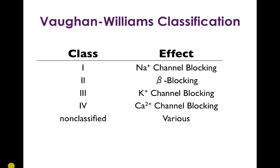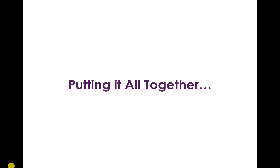To summarize, we covered the Vaughan Williams classification: class 1 drugs subdivided into 1A, 1B, and 1C; class 2 drugs, the beta blockers; class 3 drugs, the potassium channel blockers; class 4 drugs, the calcium channel blockers; and two non-classified drugs, adenosine and digoxin. Now we'll look at how these drugs are used for different arrhythmias, grouping them by class while noting the individual side effects covered earlier.